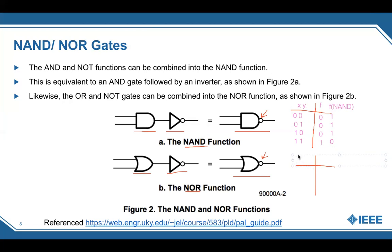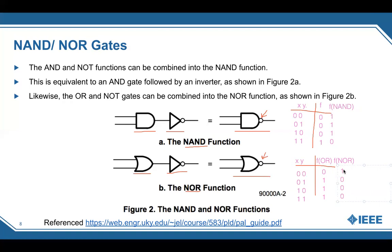For the NOR gate: with inputs 00, 01, 10, and 11 — for an OR gate, one of the inputs has to be true for the output to be true, giving outputs 0, 1, 1, 1. The NOR gate just takes the opposite since a NOT gate is added, flipping that to 1, 0, 0, 0. The NOR gate flips the output of the OR gate, and the NAND gate flips the output of the AND gate.